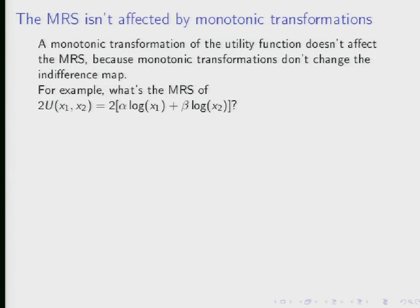This is a very simple, extremely simple monotonic transformation. And you might think, if you did something crazy involving exponents and factorials and a bunch of other funky stuff like that, surely you wouldn't wind up with the same marginal rate of substitution. But you'd be mistaken. As long as it's a monotonic transformation, you'll wind up with exactly the same marginal rate of substitution.